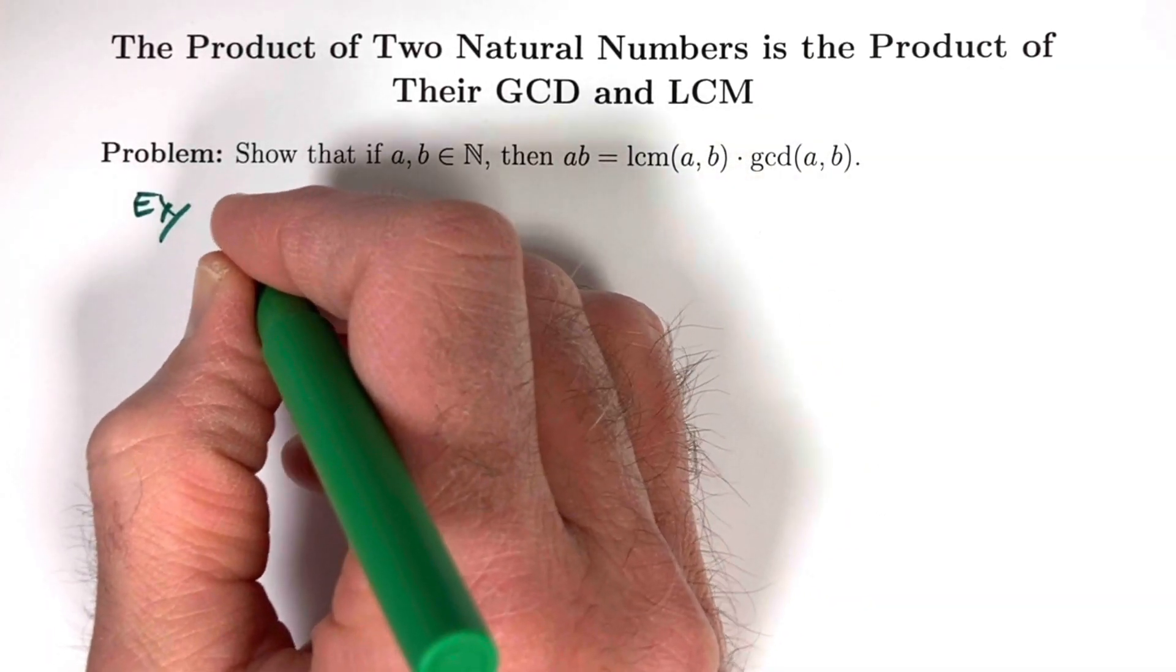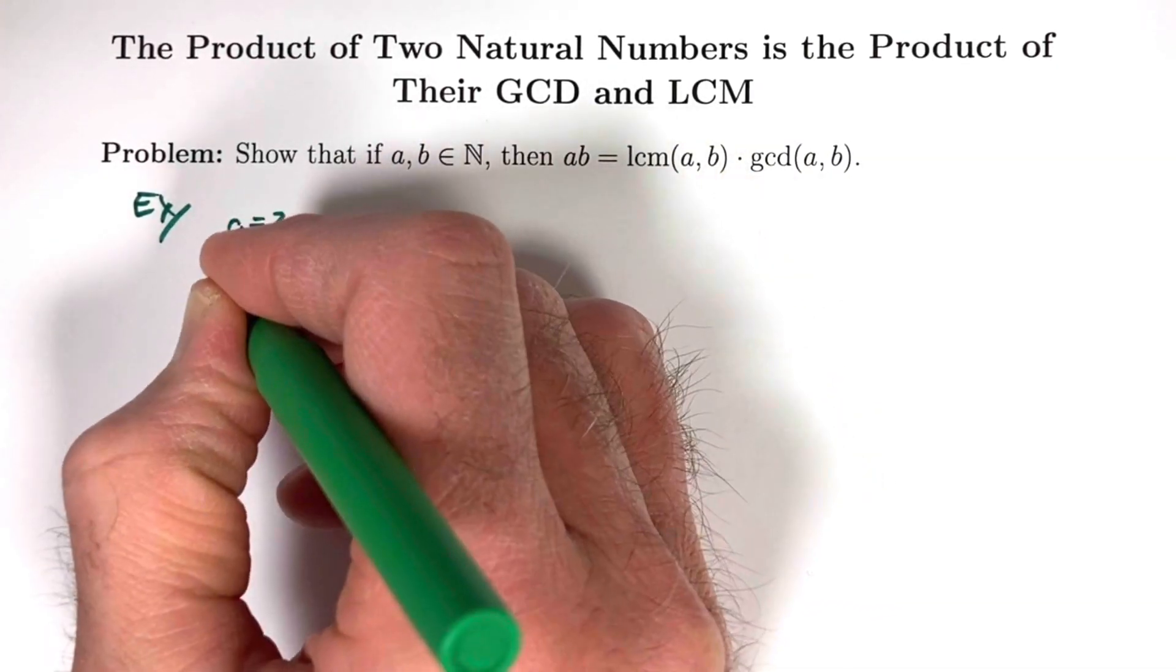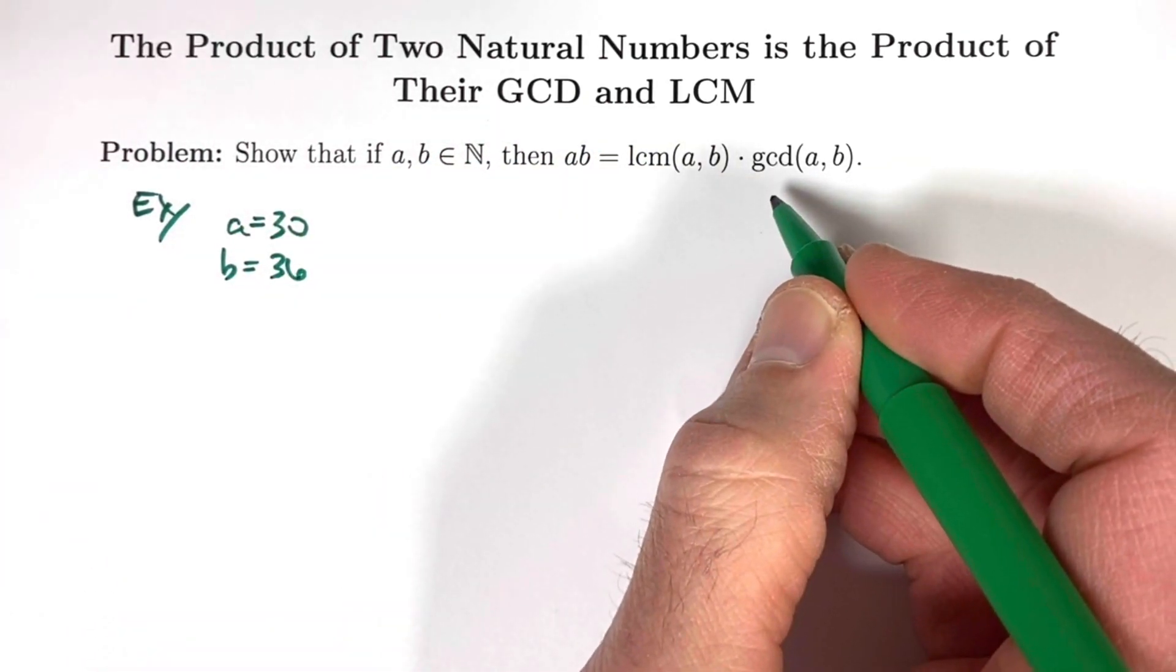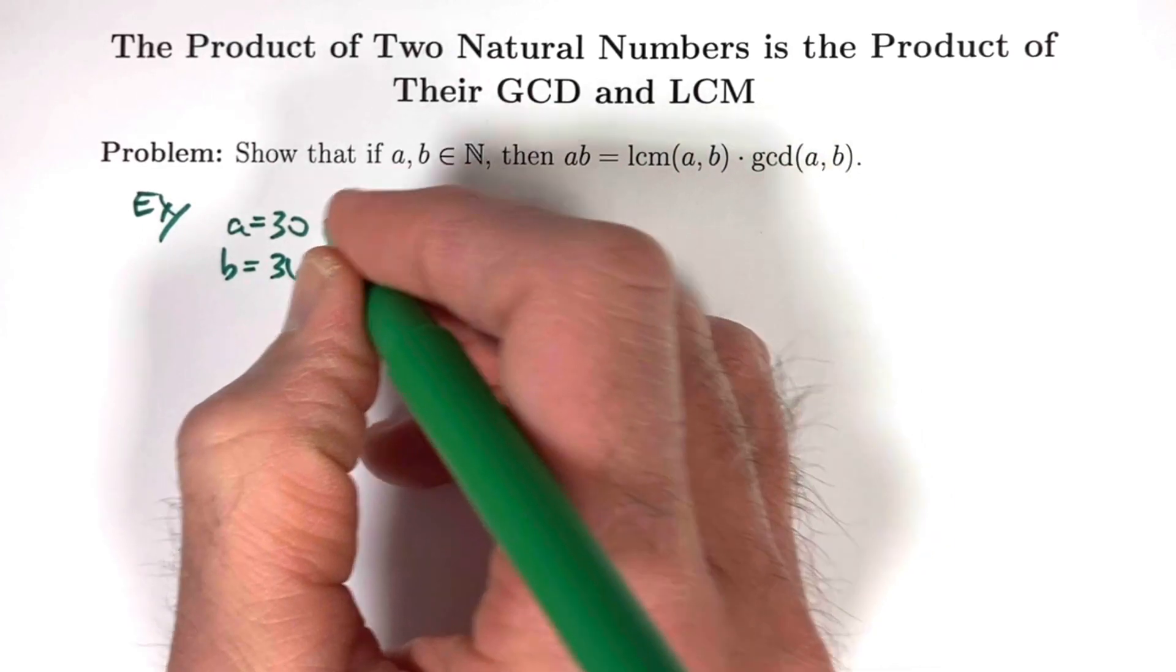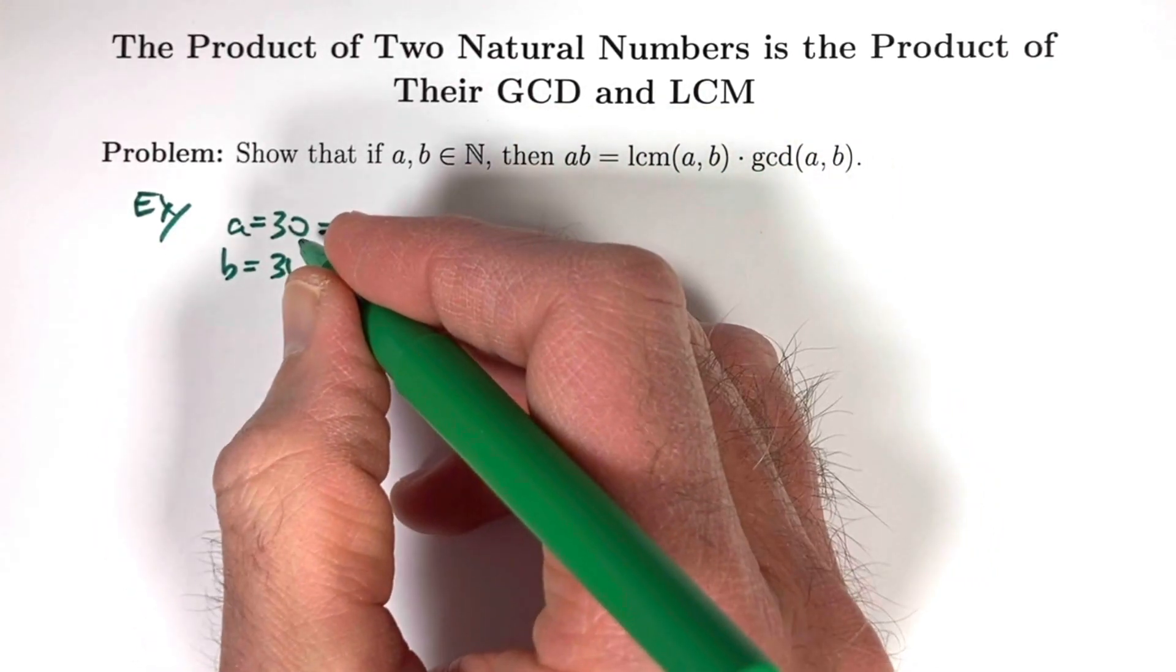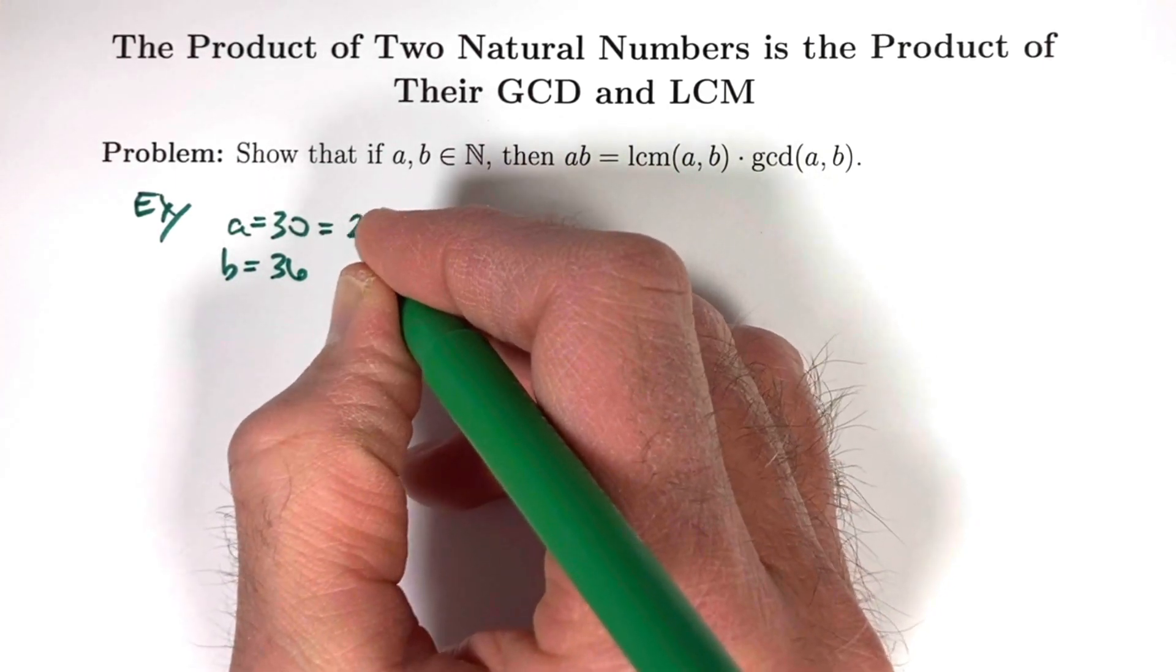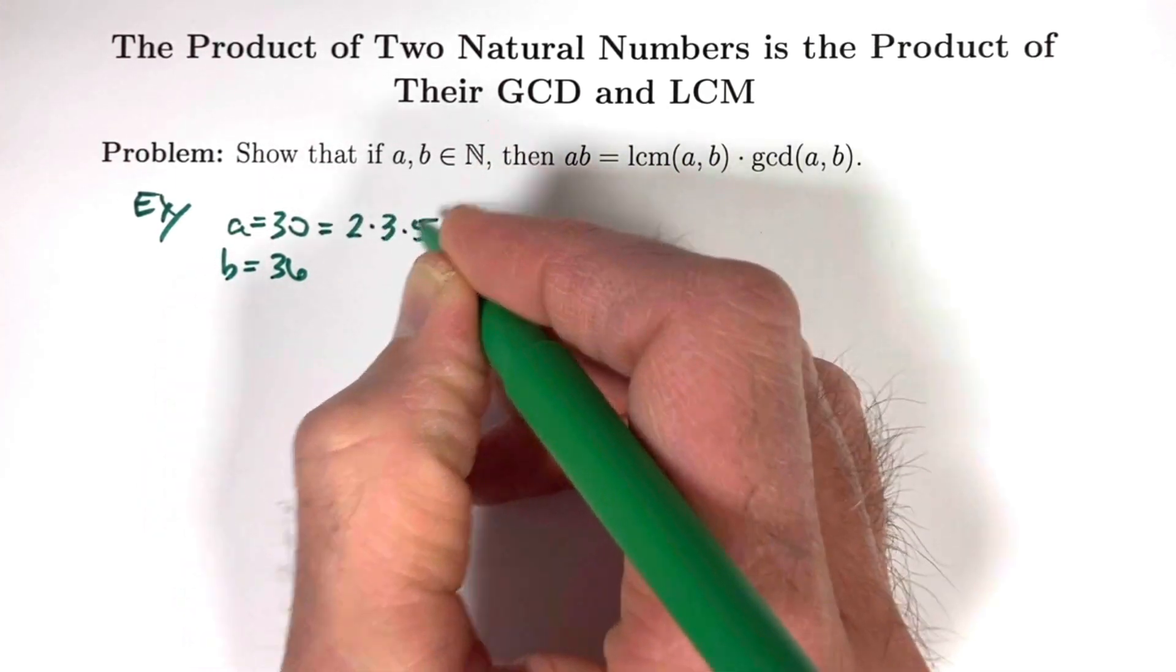Let's let A equal 30 and B equal 36. Before we check that this works in this case, it's going to be helpful to write down the prime factorizations of these numbers. 30 is 5 times 6, but 6 is 2 times 3. The prime factorization of 30 is 2 times 3 times 5.